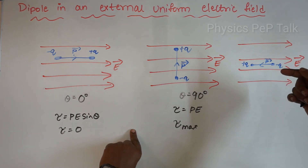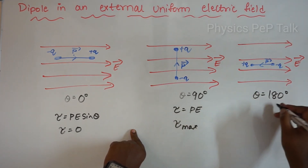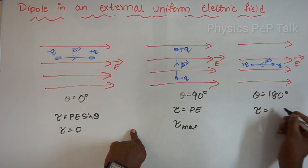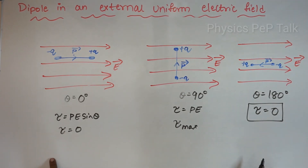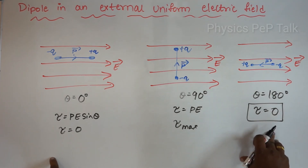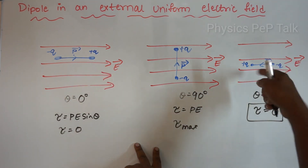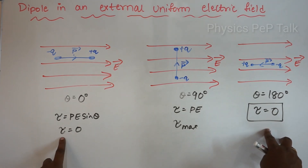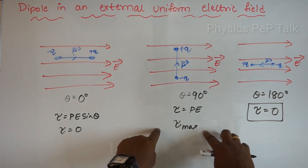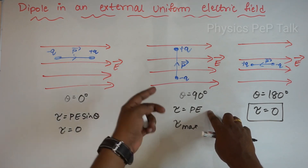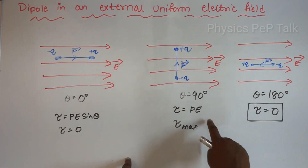Third case: when the dipole moment is in the opposite direction to the electric field, theta equals 180 degrees. Sin 180 equals zero, so torque becomes zero again — this is the anti-parallel case. So both the parallel and anti-parallel cases give torque equal to zero, which is minimum. Only when the angle between the dipole moment and the electric field is 90 degrees is the torque maximum, equal to pE.